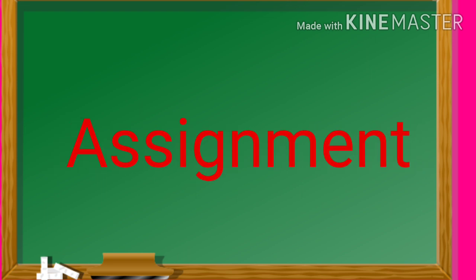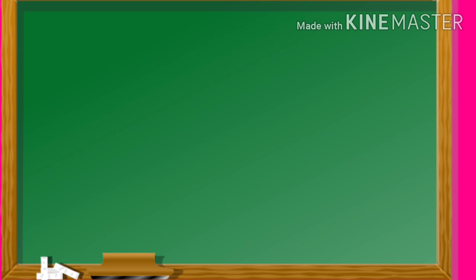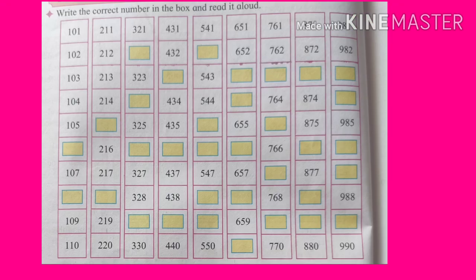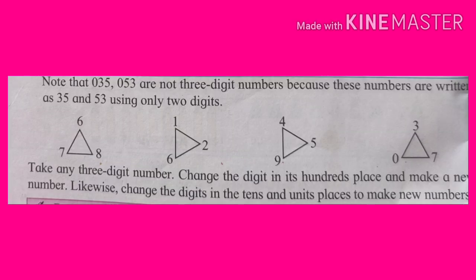You have to complete this assignment. In the first part, you have to fill the proper numbers in the empty boxes. And in the second part, you have to make 3-digit numbers from the given digits. Thank you.